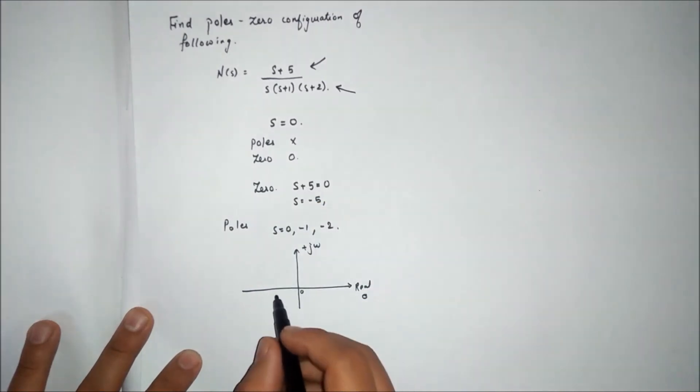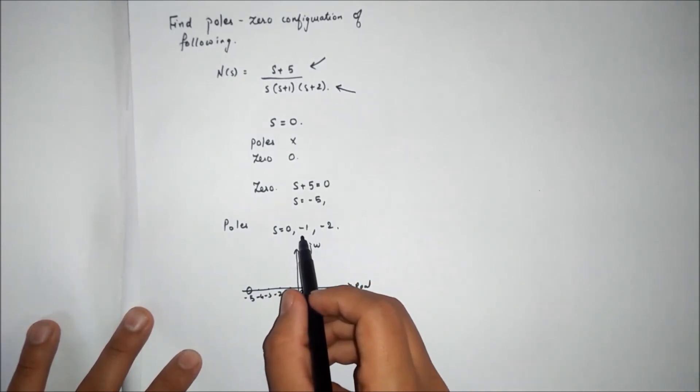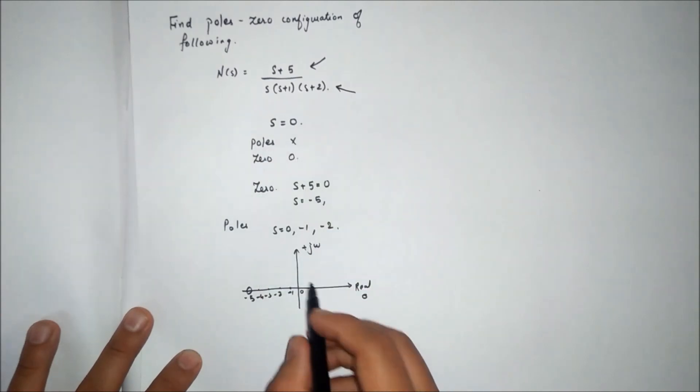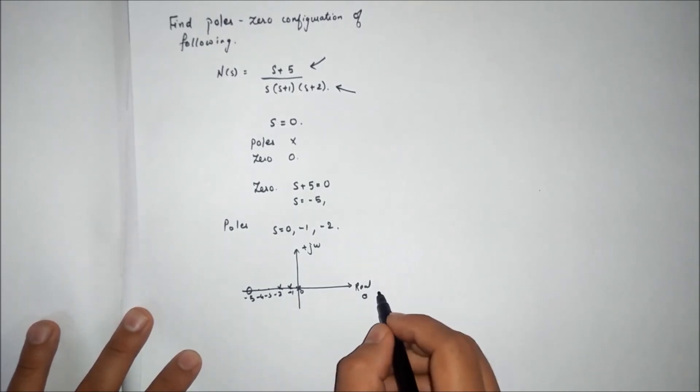it is minus five. We write minus one, minus two, minus three, minus four. This is zero on the axis. The poles are at s equals zero, s equals minus one, and s equals minus two.